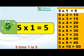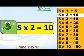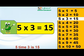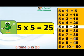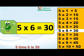5 times 1 is 5. 5 times 2 is 10. 5 times 3 is 15. 5 times 4 is 20. 5 times 5 is 25. 5 times 6 is 30.